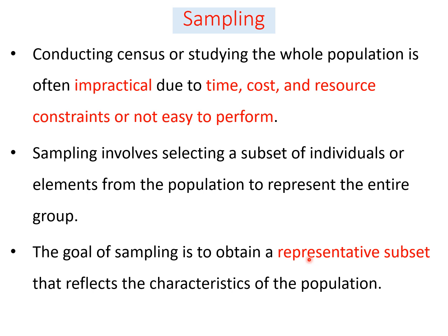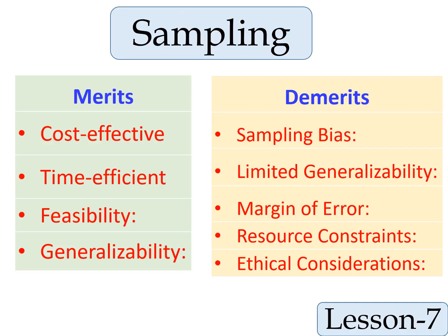The main objective of taking a sample is that it requires less time, less cost, and less resources, but can still represent the characteristics of the population. Even though sampling has merits like being cost-effective, time-efficient, feasible, and generalizable, there are also demerits like sampling bias, limited generalizability, margin of error, resource constraints, and ethical considerations — particularly when the sample size is very large.